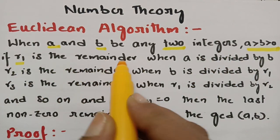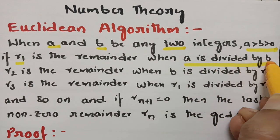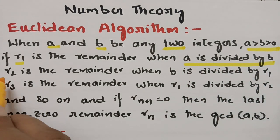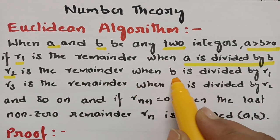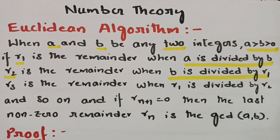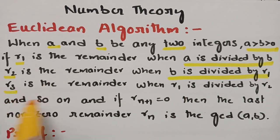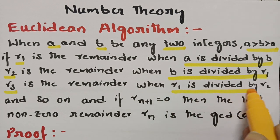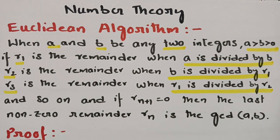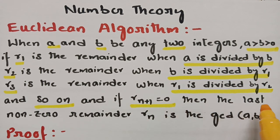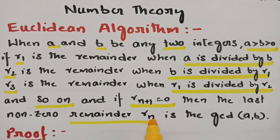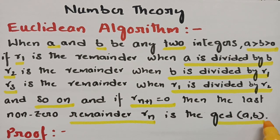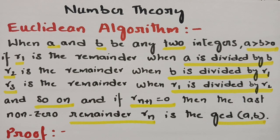If R1 is the remainder when A is divided by B, R2 is the remainder when B is divided by R1, and R3 is the remainder when R1 is divided by R2, and so on — if Rn+1 is equal to 0, then the last non-zero remainder Rn is the GCD of A and B.